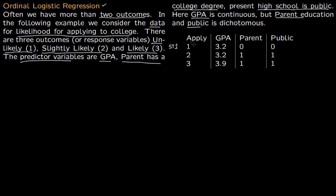Student one is unlikely to apply; his GPA is 3.2, parent education is 0 (parent did not have a college degree), and public is 0 (studying in a private school). Student two is slightly likely to apply; GPA is 3.2, parent had a college education, and he is studying in a public school (public = 1). Student three is highly likely to apply; GPA is 3.9, parent has a college degree, and he is studying in a public school.